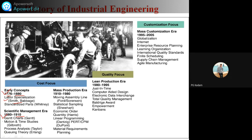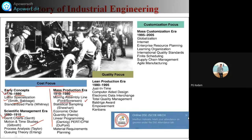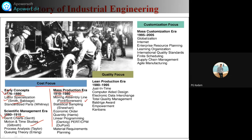Under the cost focus, the mass production era ran from 1910 to 1980, with Ford company introducing the moving assembly line and starting mass production. The quality focus and lean production era followed, with development of just-in-time, computer-aided design, electronic data integration, total quality management, Kanban, the Baldrige Award, and empowerment. These are key terms from the history of industrial engineering.